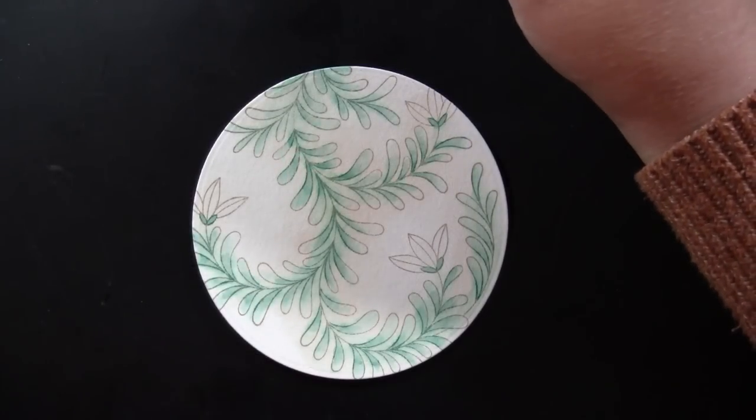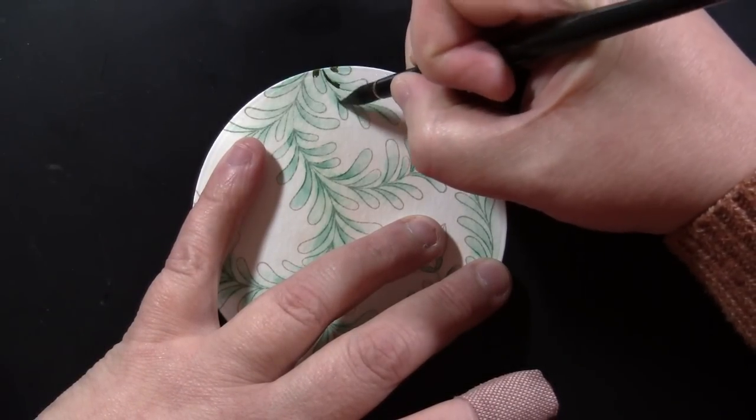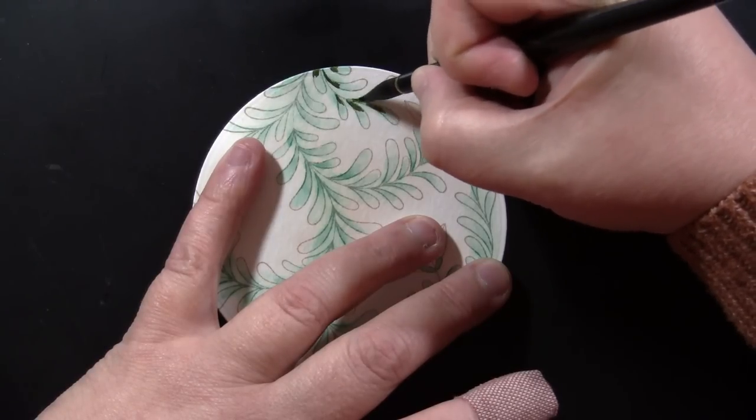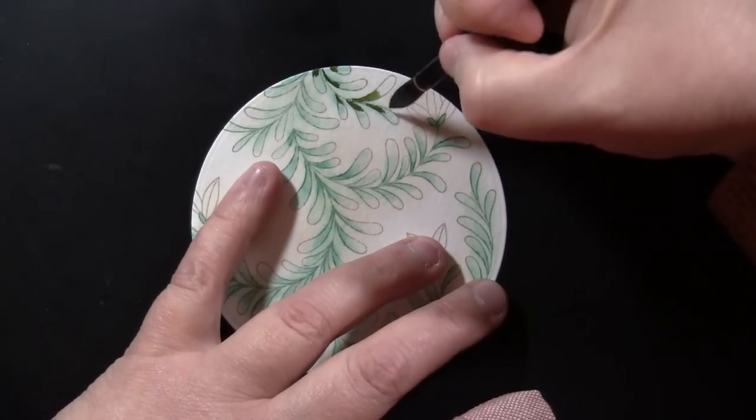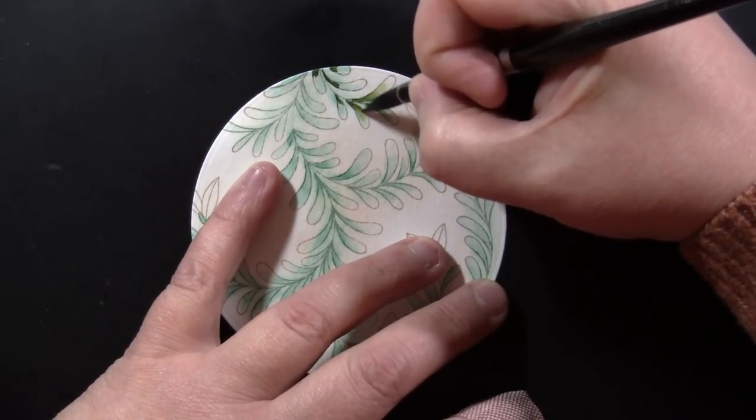Then I'm using Distress Ink Reinkers used as watercolors to paint the rest of this image. As you can see, I was not trying to paint everything perfectly. So some of that Evergreen Bough ink color blended outside of those, let's call them leaves.